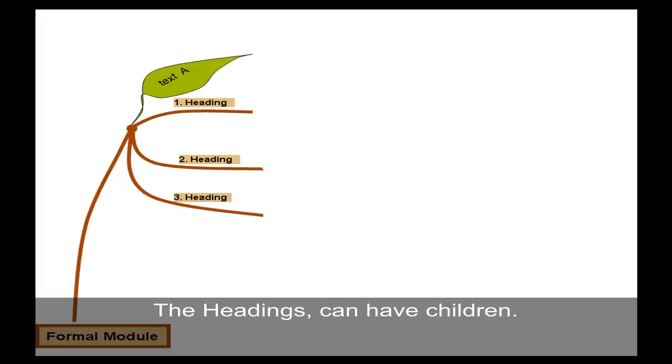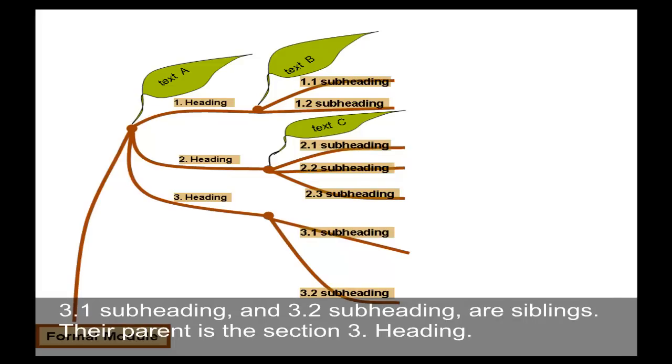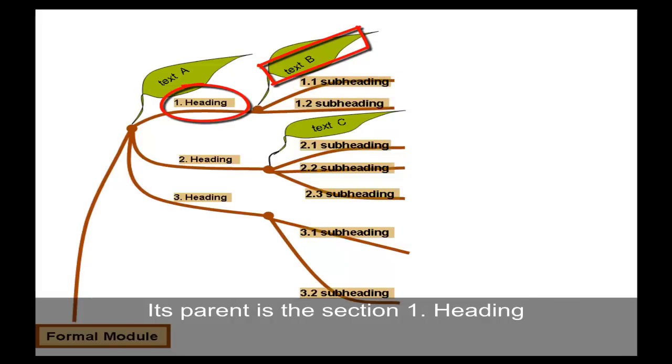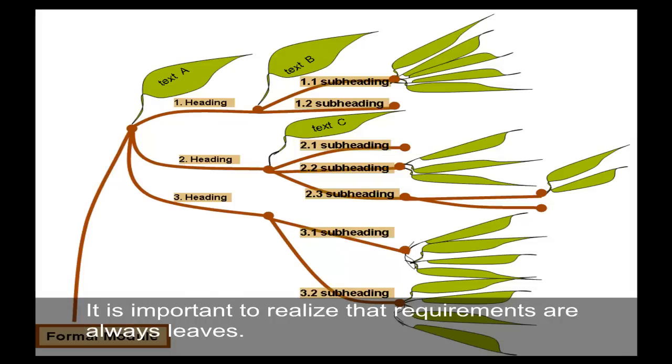The headings can have children. At the next level, we see more plain text and subheadings. The 3.1 and 3.2 subheadings are siblings. Their parent is the section 3 heading. Plain text B, which is a leaf, has two siblings: 1.1 subheading and 1.2 subheading. Its parent is section 1 heading. At the next level of hierarchy, we can see more branching and so forth. It is important to realize that requirements are always leaves.